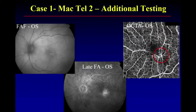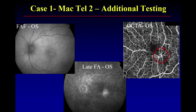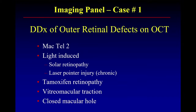Phil is correct — this is MacTel 2. Here are some of those ancillary tests. Autofluorescence: helpful, yes or no? Fluorescein: yes or no? And there's your OCT angiography showing that typical tangled vessel. This is a quick differential — you mentioned tamoxifen, and there are a couple other things to consider — but this is pathognomonic of MacTel 2.